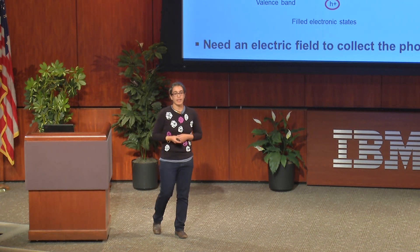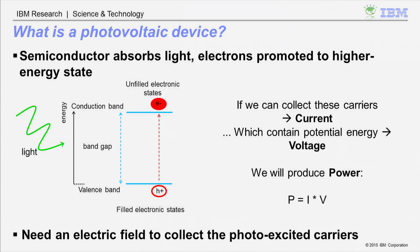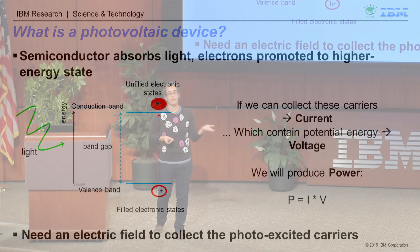In order to separate these carriers, we have to have an electric field. In the absence of an electric field, even though we'll absorb the light and promote these electrons into an excited state, they'll just decay back down to the ground state unless we can have an electric field separate these carriers. The way we create an electric field is we use a materials science trick that we call a P-N junction, and I'm going to describe what that is using silicon as an example.